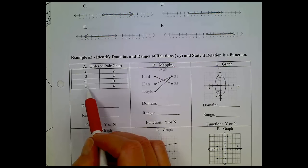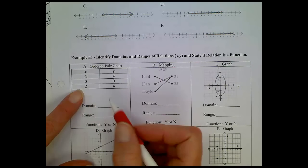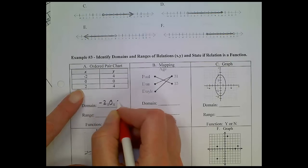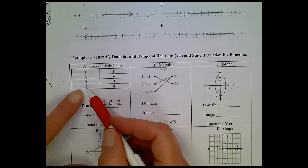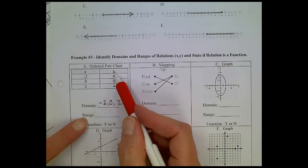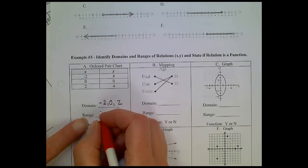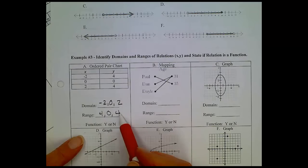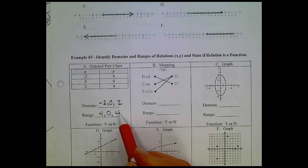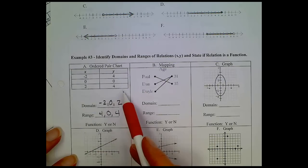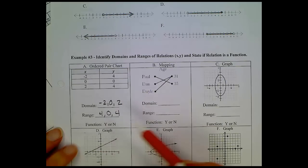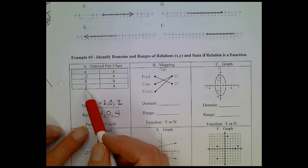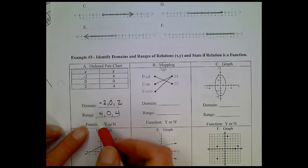When you're picking out the domain, as we've already said, domain values are represented by the variable x. So, everything in this chart, under the letter x, shows up in my domain. My domain is negative 2, 0, 2. The range is my y values. So, my solution for range will be 4, 0, 4. Now, remember, you don't have to repeat the 4, but it's not wrong if you do. When you look at this, can you tell if it's a function, just by looking at the values? One of the ways you can, is by looking at your x values specifically, making sure that none of them repeat. Since none of these x values repeat, we have a function.